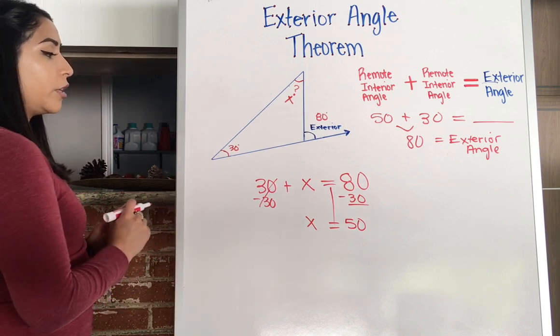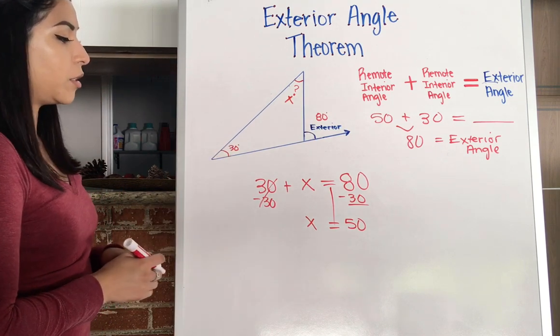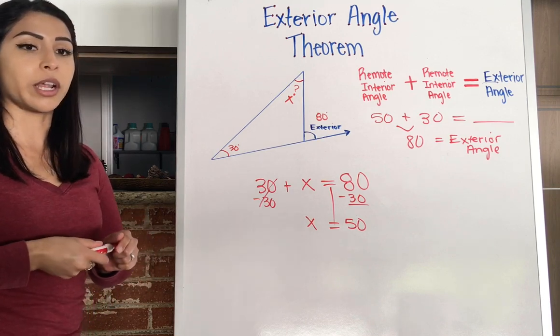Right? Which I already knew up there, but in case you were solving it a little bit different, these are all the ways you could solve for the missing pieces using the exterior angle theorem.